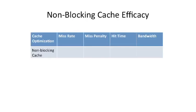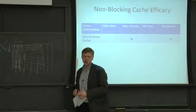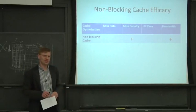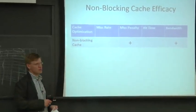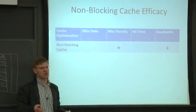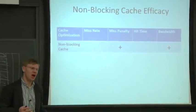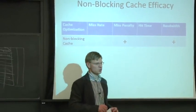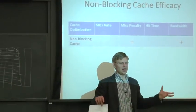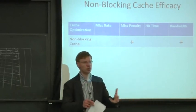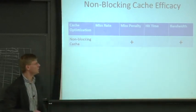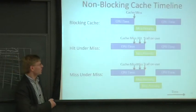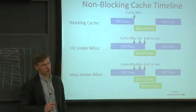Non-blocking caches can effectively increase the bandwidth to lower levels of cache such as L1s. They can also increase bandwidth by merging misses — the miss status handling register allows multiple cache misses to merge into a single memory transaction. And the miss penalty is effectively lower because, as we saw in the timeline, we've overlapped the miss penalty with other useful computation.